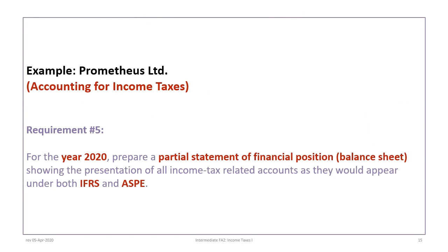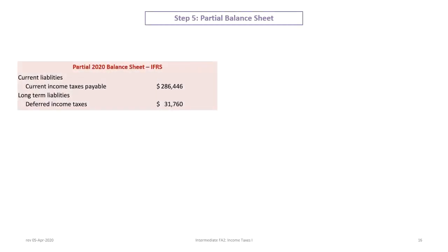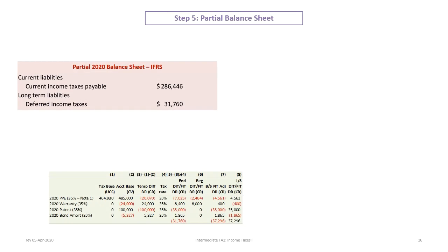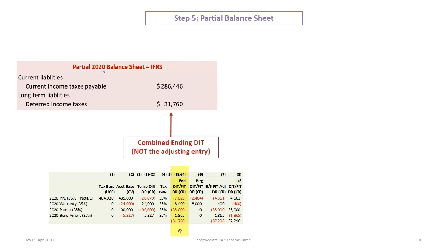Requirement five is to prepare a partial balance sheet for 2020 showing all income tax related accounts under both IFRS and ASPE. Under IFRS, the entire amount of income tax liability is long-term. We have a current income tax payable of $286,446 as a current liability for the current income tax expense, and then a long-term liability for deferred income tax of $31,760.